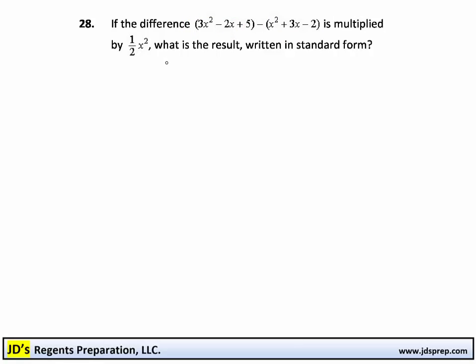First, let's take 3x squared minus 2x plus 5 and subtract the x squared plus 3x minus 2. If we are subtracting an entire quantity, essentially that is going to be subtracting every single thing inside of that quantity.